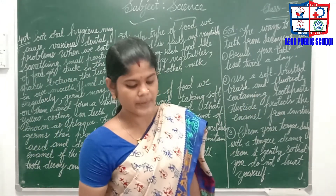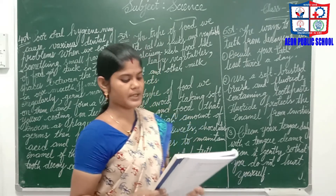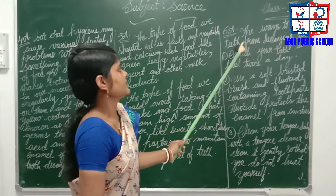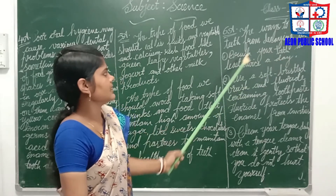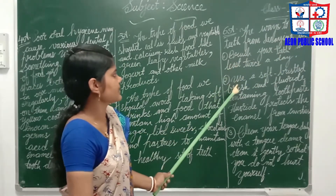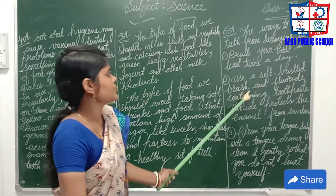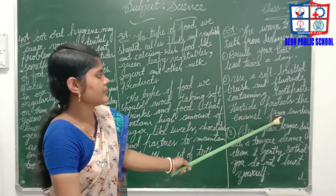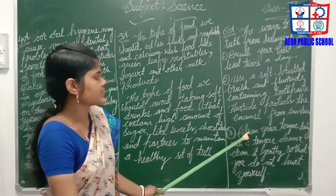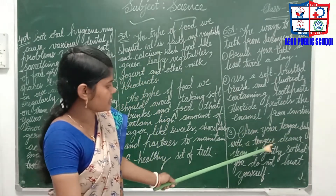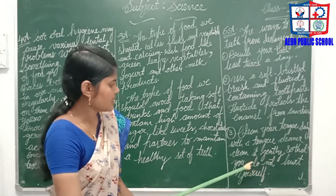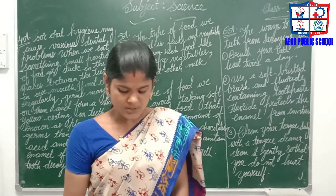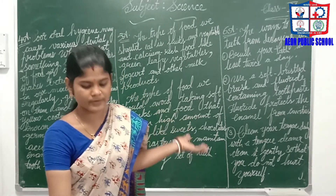Sixth question: mention a few ways to protect teeth from decaying. First, brush your teeth at least twice a day. Second, use a soft bristle brush and fluoride-containing toothpaste — fluoride protects the enamel from cavities. Third, clean your tongue daily with a tongue cleaner, gently so that you do not hurt yourself. You may write any few points, three or five or more, as you wish.